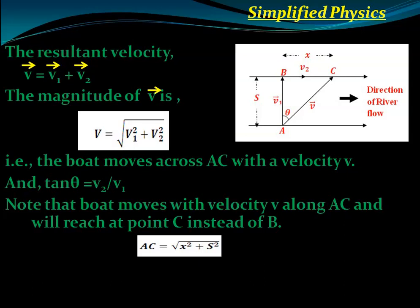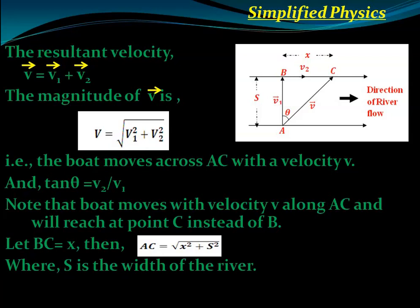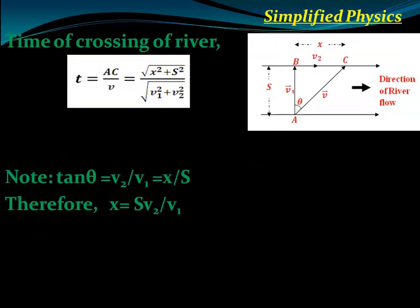The distance AC equals the square root of x squared plus s squared by the Pythagorean theorem, where s is the width of the river and BC equals x. The shortest crossing time is t equals AC divided by V, where V is the magnitude of the resultant velocity. Also, x equals s times V2 divided by V1.